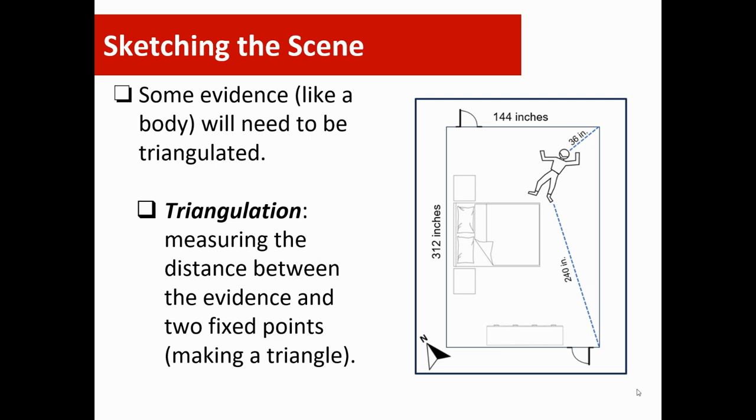Some evidence like a body will need to be triangulated. Triangulation is measuring the distance between the evidence and two fixed points, creating a triangle. In this picture, we have a victim. The investigator measured from the victim's head to a fixed point, this corner wall, determining 36 inches, and from the victim's foot to another fixed point, 240 inches. This gives jury members an idea of where the body is in relation to other areas of the room.